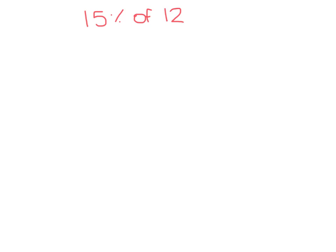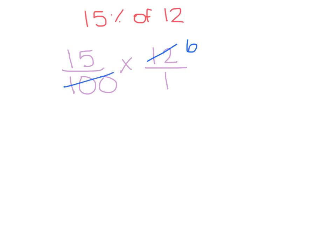Let's try another example: 15% of 12. First you want to rewrite it as a fraction. So we have 15 over 100 because percents are always out of 100. 'Of' means multiplication, then 12 over 1. Check to see if you can cross simplify — we can. We can divide both 12 and 100 by 2, and we would get 6 and 50.